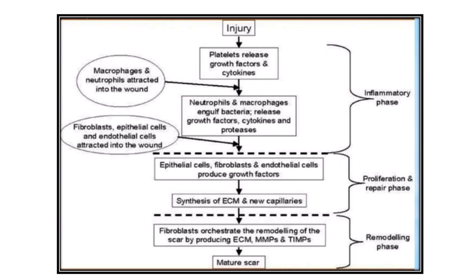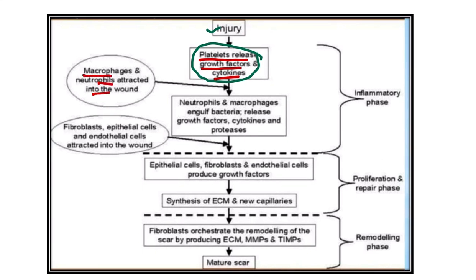When there is an injury, platelets release growth factors and cytokines. First of all, most immediately, platelet degranulation occurs — platelets release different types of chemical substances from inside and from the platelet cell membrane. After that, macrophages and neutrophils are attracted into the wound because different types of chemotactic agents are released.